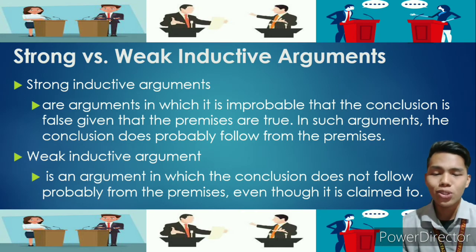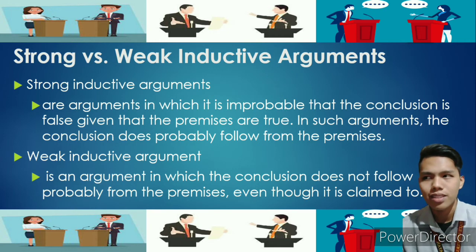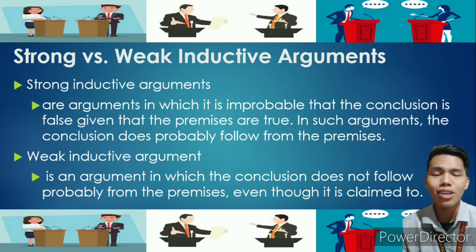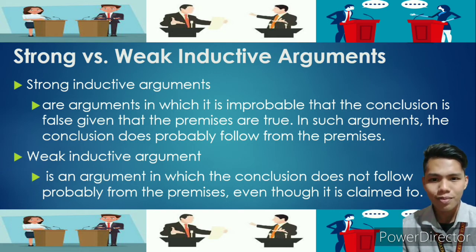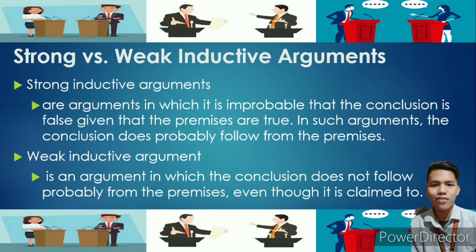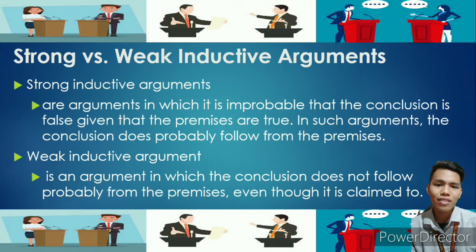Identifying strong and weak inductive arguments. Strong inductive arguments are arguments in which it is improbable that the conclusion is false given that the premises are true. In such arguments, the conclusion does probably follow from the premises. Weak inductive arguments, on the other hand, are arguments in which the conclusion does not probably follow from the premises, even though it is claimed to.